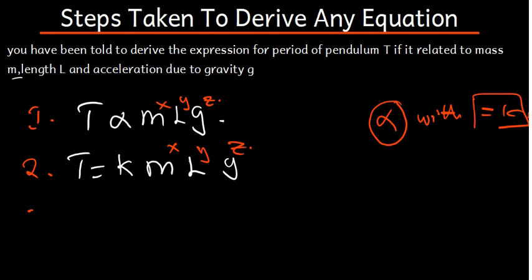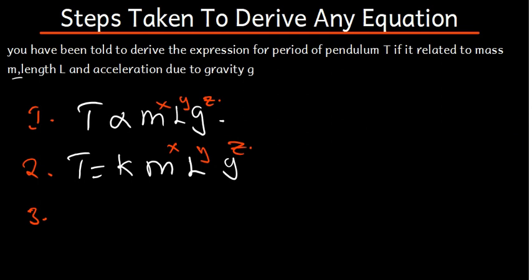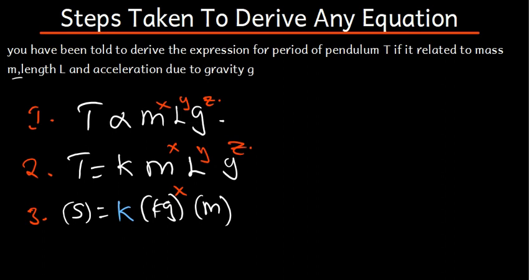Step 3 is very simple and direct: we just replace each quantity with its SI units. We have the period, which is in seconds. So we are going to put seconds there — in brackets. K is constant so we don't have to change K. Mass is in kg, so we put kg raised to the power X. Length is in meters, raised to the power Y. G is meters per second squared, raised to the power Z.